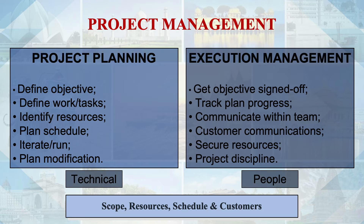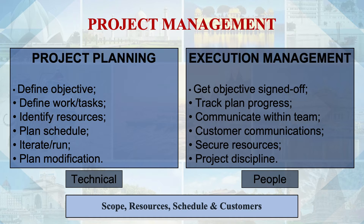Project management includes two dimensions: the conceptual/technical side and the people side. The technical aspect covers project planning, objectives, defining project work, identifying resources, and planning the schedule — for example, if a project has 10 steps, determining how many days each step will take. The schedule is then iterated and modified as needed.